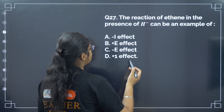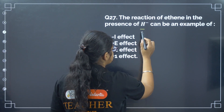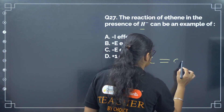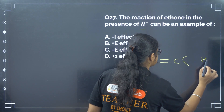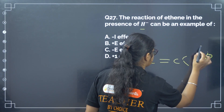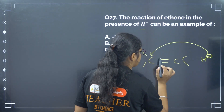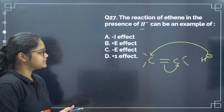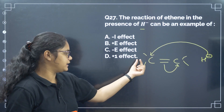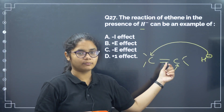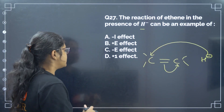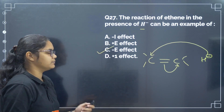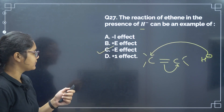Next: the reaction of ethene in the presence of H⁻ can be an example of? H⁻ reacts with ethene, and the electrons from the double bond shift to one of the carbons. This is known as the electromeric effect — when electrons from a double bond shift to one carbon upon attack by a reagent. Correct answer is option number C.